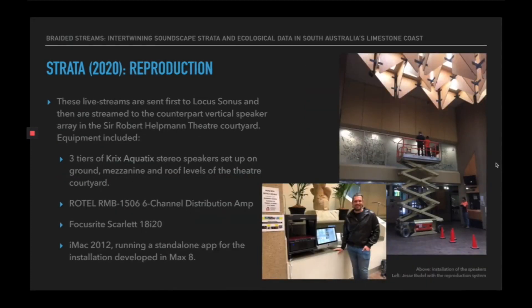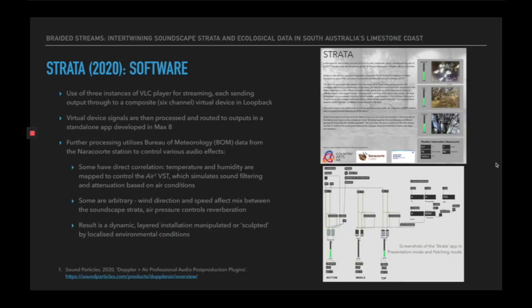In terms of reproduction, these live streams are first sent to Locus Sonus and then streamed to the counterpart vertical speaker array in the Sir Robert Heltman Theatre courtyard. The equipment included three tiers of Crix Aquatics stereo speakers set up at ground, mezzanine, and roof levels of the theatre courtyard, a Rode RMB 1506 six-channel distribution amp, a Focusrite Scarlett 18i20 audio interface, and an iMac 2012 running a standalone app for the installation developed in Max 8.